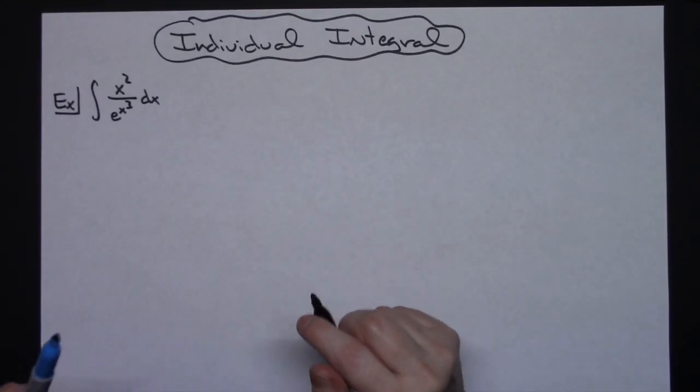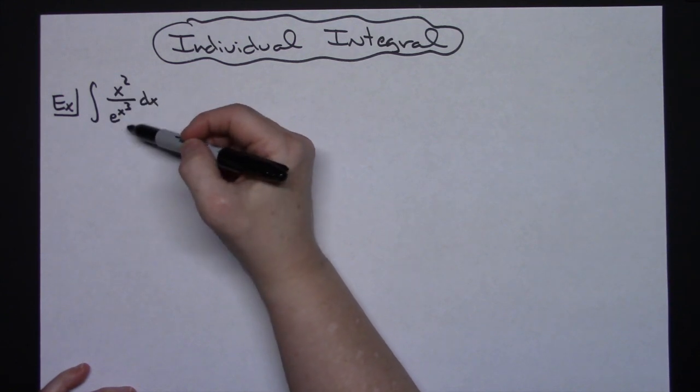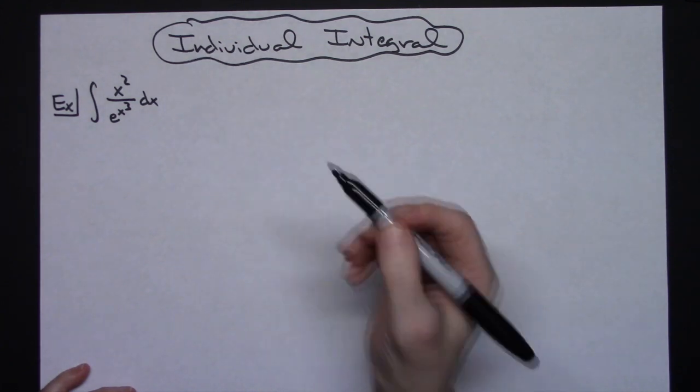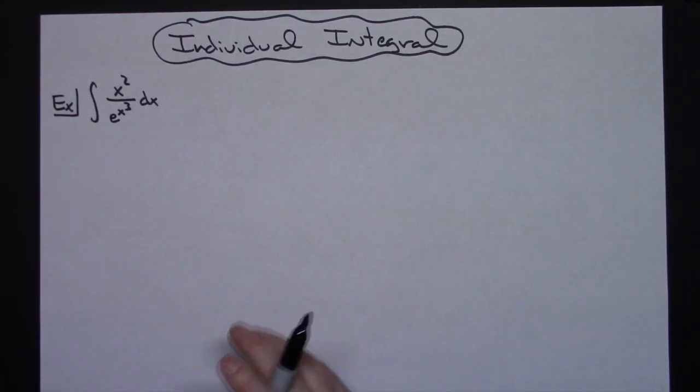In this video I'm going to work out a single individual integral. It's going to be the integral of x squared over e raised to the x to the third dx. It's going to be a straightforward integral that you would probably find in a Calc 1 class.